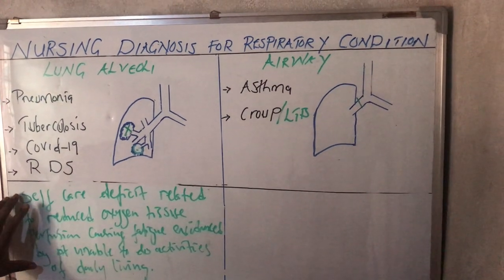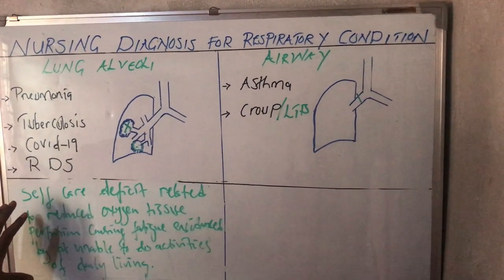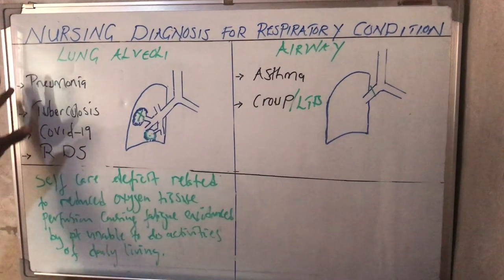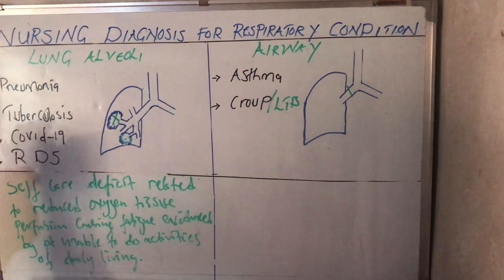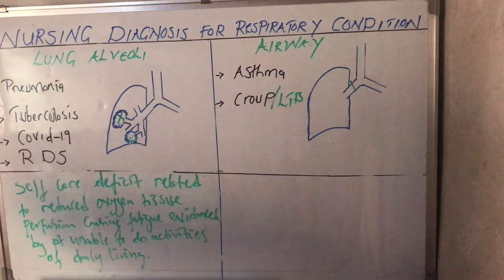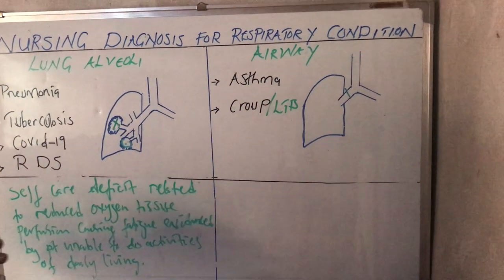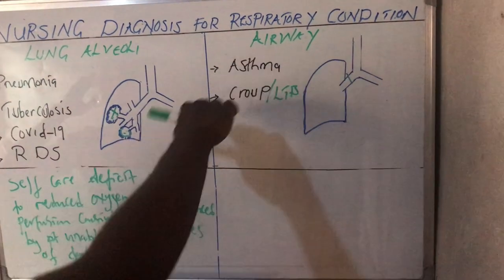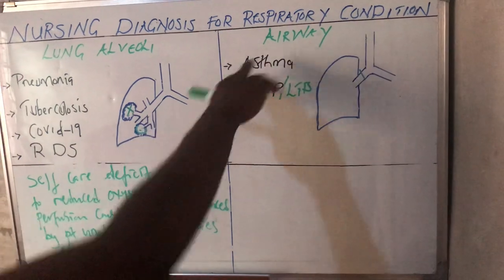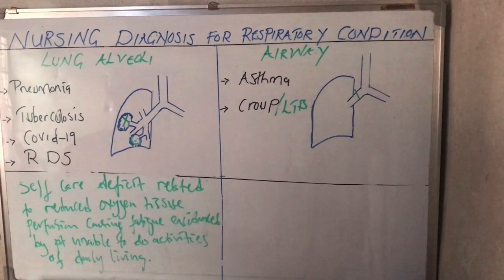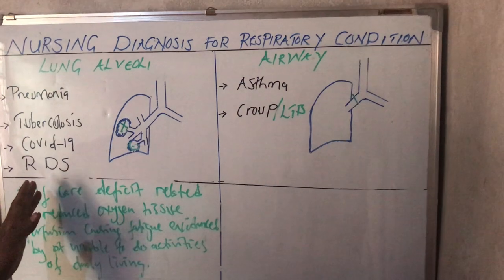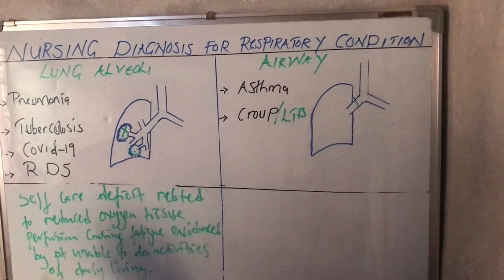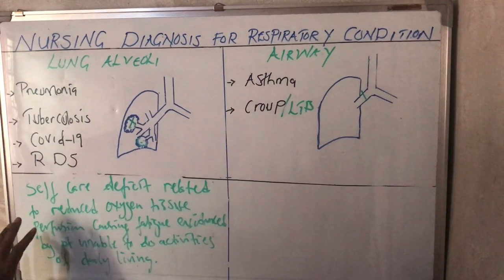This is how self-care deficit applies when dealing with an adult, but not in pediatrics. These are the nursing diagnoses under conditions affecting the lung alveoli — pneumonia, tuberculosis, COVID-19, and RDS — and they apply in all these conditions. Moving on to the nursing diagnoses for conditions that affect the airway, only a few will change.